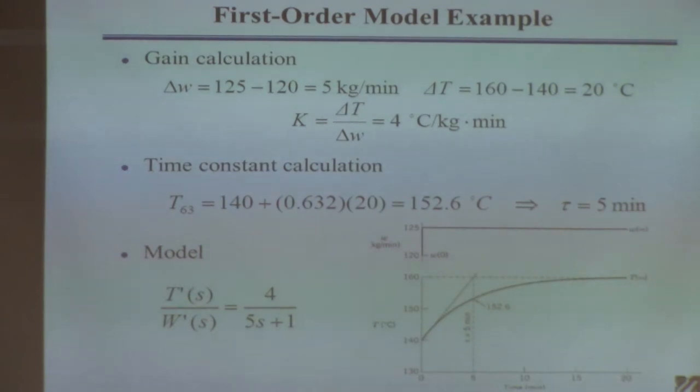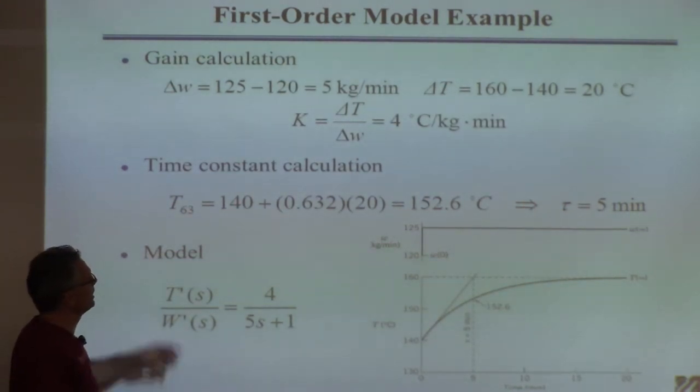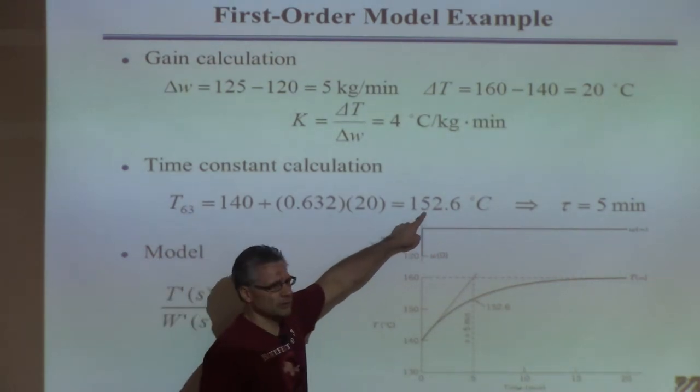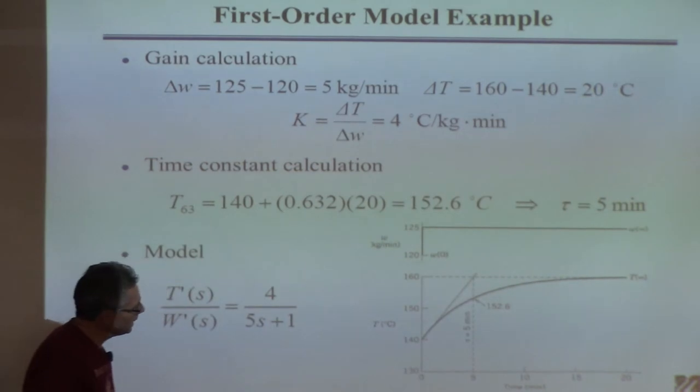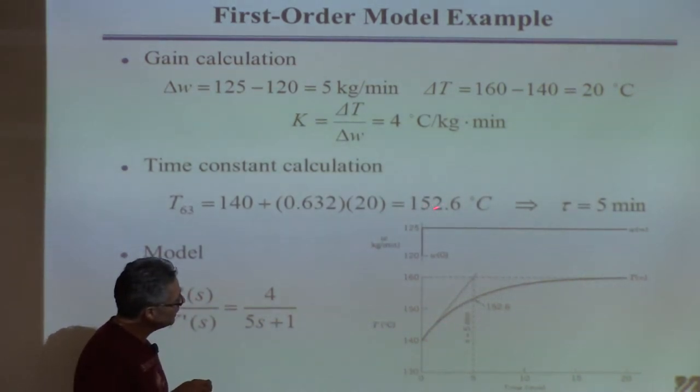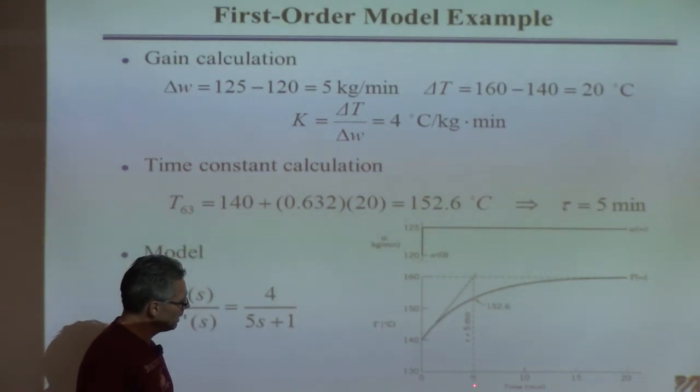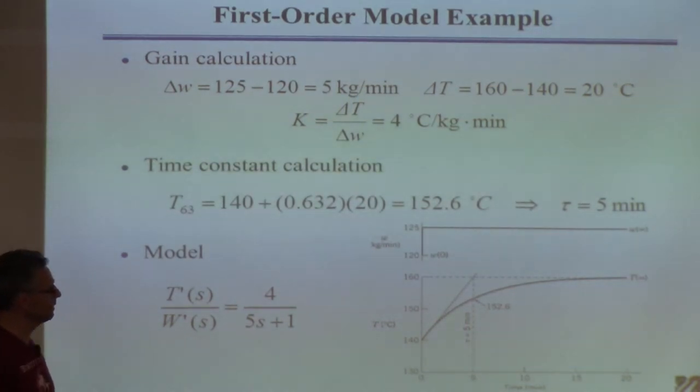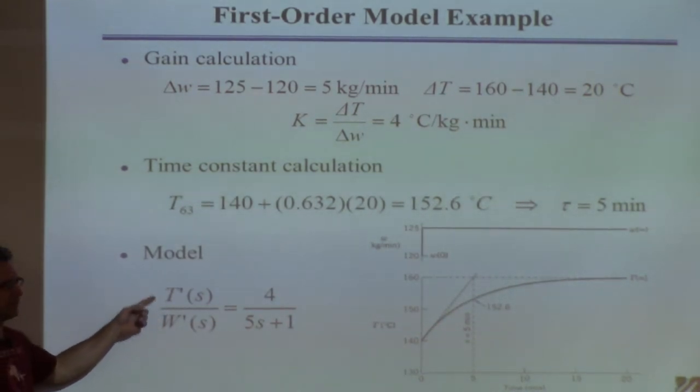Now you want to find the time constant. Find when the response is 63.2% complete. I take the initial value of the temperature and add 0.632 times the amount the temperature changed. So I go to my data and find when the temperature reaches 152.6°C. I find it's here at 5 minutes. So the time constant is 5, because I did the step change at time equals 0, and 63.2% complete is at 5. So tau is 5 minutes. This is my transfer function: T'(s)/W'(s) = 4/(5s+1), with gain of 4, time constant 5, and flow and temperature in deviation variables.